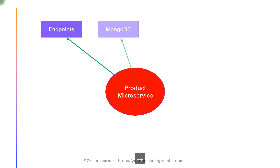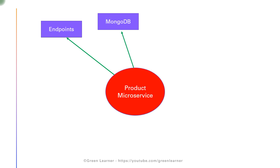Next we integrated MongoDB so that we can persist the data in the database. We could see that whenever the Product Microservice is going down, crashing, or there is any problem, we do not see any impact on the data — that is why we integrated MongoDB so that we can store the data.